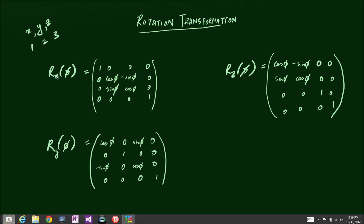To rotate the coordinates of an object on the X axis, you use this algorithm. When you multiply this matrix by any vector, all the coordinates on the X axis stay the same because of the 1 in that position. The Y and Z coordinates are transformed using sines, cosines, and negative sines. I recommend you write these down or memorize them — they're available online as the standard rotation transformation algorithms.